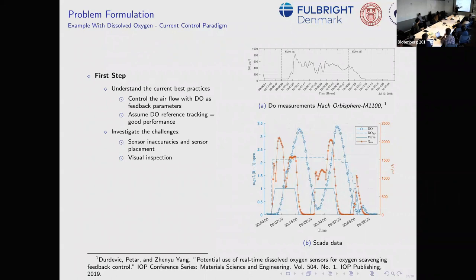Here's an example of dissolved oxygen control — raw data, nothing done to it, taken directly from a plant. The dotted line is the set point for oxygen. The way we control oxygen is by injecting air through a compressor and opening a valve — the blue line is the valve, and this is the flow of air, set point, and measurement.